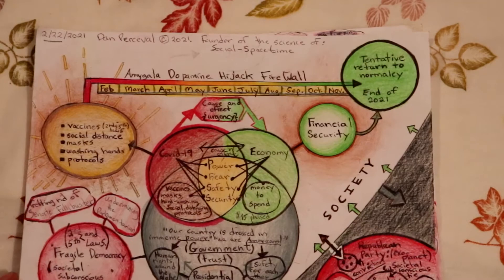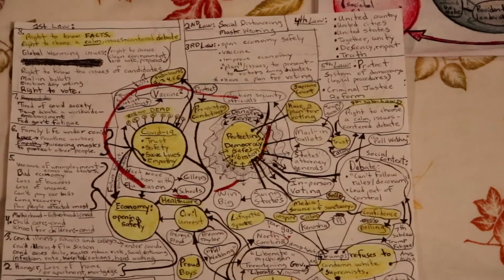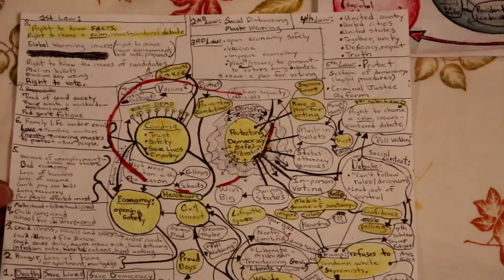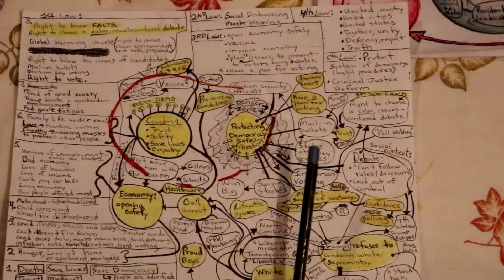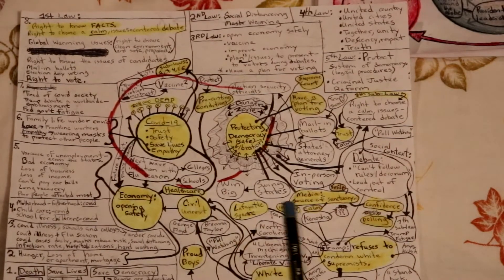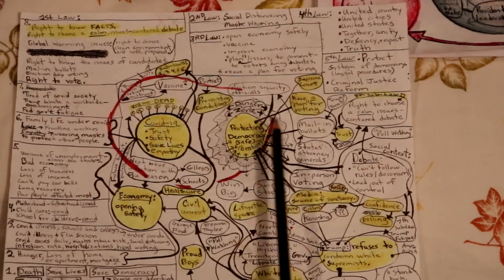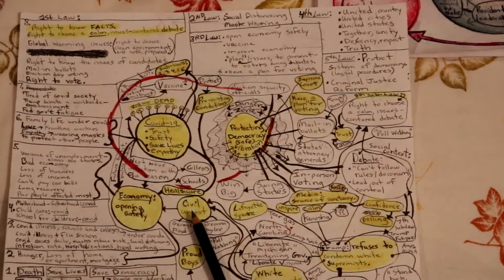All right, so over the next few months, I'm going to be rolling all this out. And this is just for all of you who may be interested. This was one of the maps that I drew out of the presidential election last year. This I believe was in September of 2020. So this is what the map looks like. It's a little messy, but this is the precise layout of social space time.